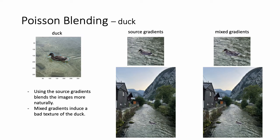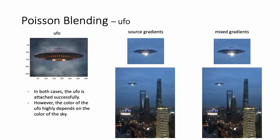I added the dog image on the stream. Using the source gradients, it helps to blend the images more naturally. On the other hand, mixed gradients induce a bad texture of the dog, since some gradients of the stream have larger magnitude and are reflected in the result. The second blended image is Shanghai with a UFO in the sky. In both cases, the UFO is attached successfully because the sky has very small gradients. However, the color of the UFO highly depends on the color of the sky, so it tends to take on a blue color.